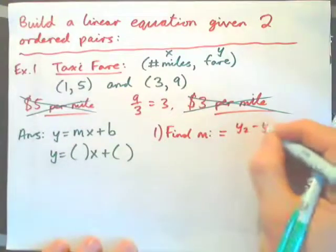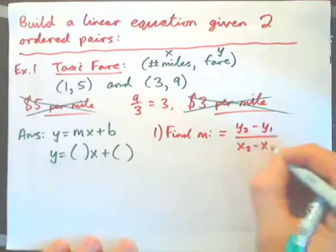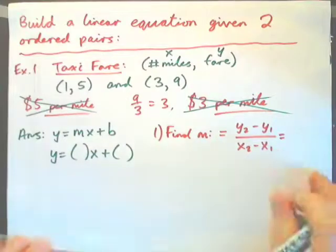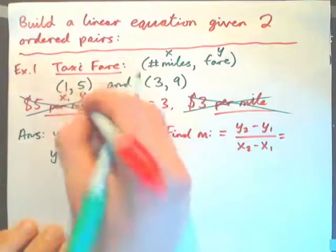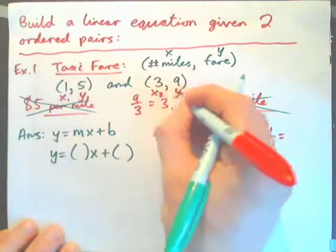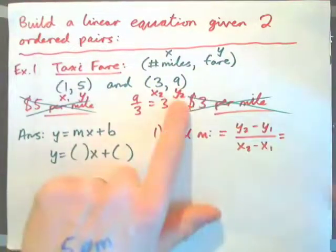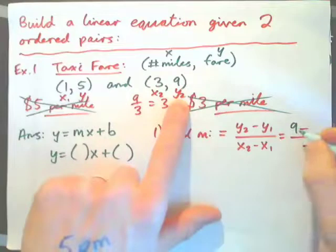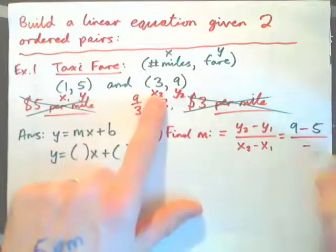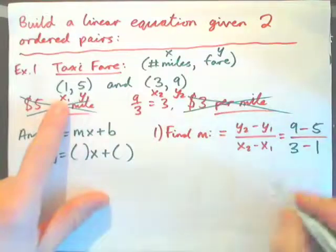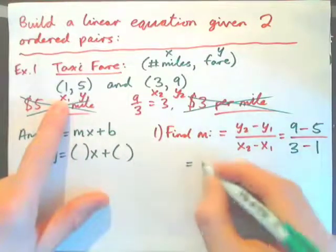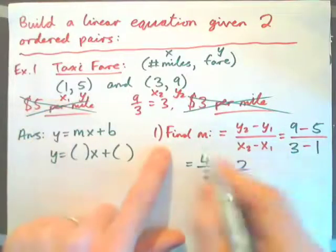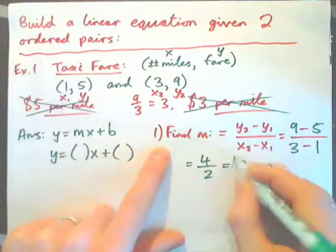The slope formula is m equals y2 minus y1 over x2 minus x1. This is the first point x1, y1; this is the second point x2, y2. Plugging in: y2 is 9, y1 is 5, x2 is 3, x1 is 1. So the slope m is nine minus five over three minus one, which is four over two, giving us two. I found m the slope to be two.